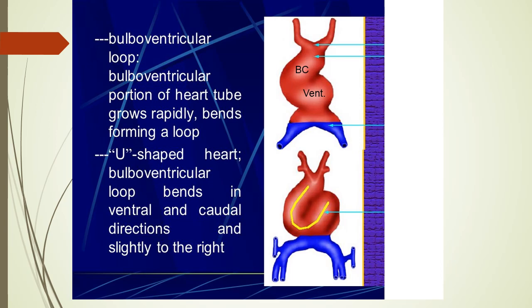This diagram shows the formation of the bulboventricular loop or cardiac loop. BC is for the bulbus cordis and the ventricle is the primitive ventricle. You can see that elongation of the heart tube results in the creation of this U-shaped loop, which gradually becomes very prominent. The loop is called the bulboventricular or cardiac loop because one limb is formed by the bulbus cordis and the other by the ventricle. The sulcus between them is called the bulboventricular sulcus.